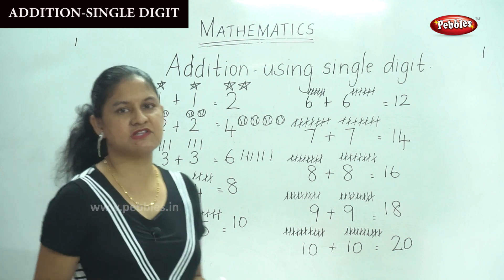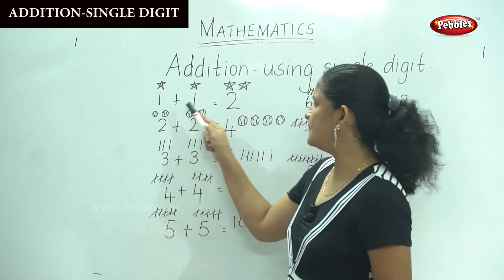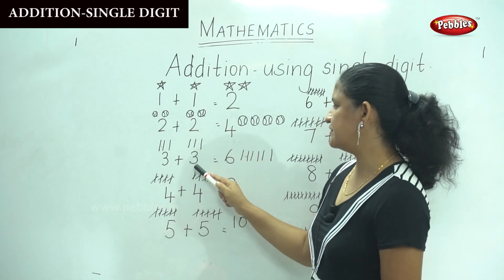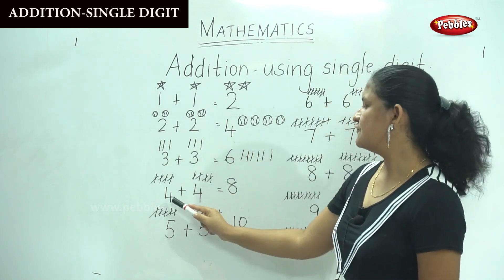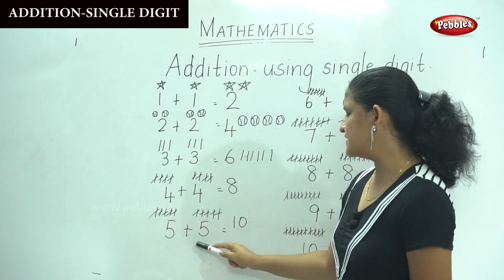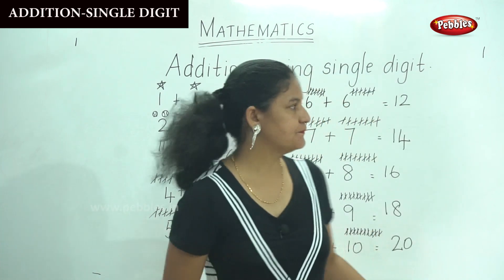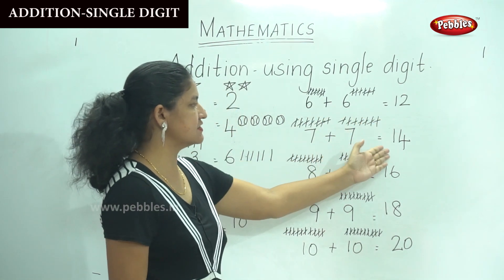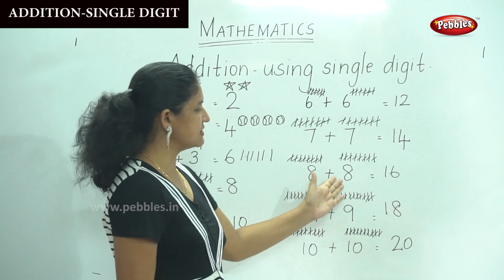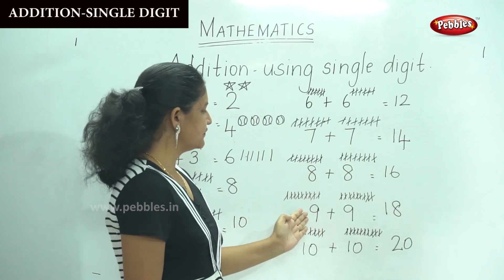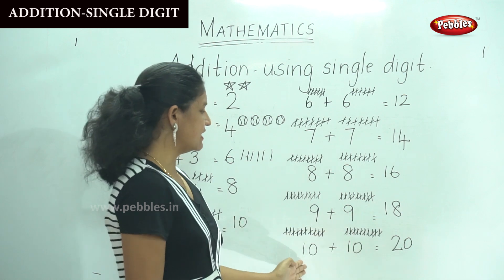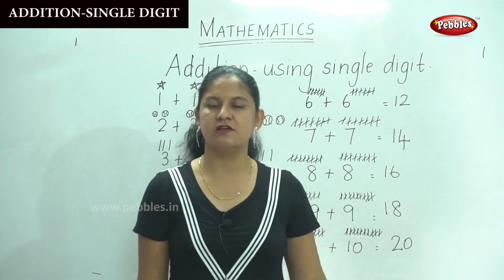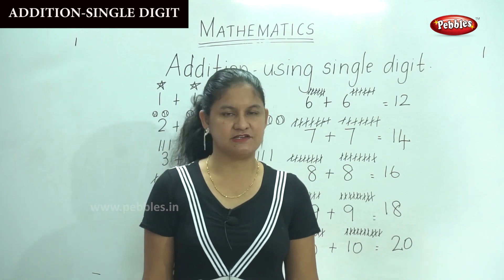Shall we see it once again? 1 plus 1 is 2. 2 plus 2 gives us 4. 3 plus 3 gives us 6. 4 plus 4 is 8. 5 plus 5 gives us 10. 6 plus 6 gives us 12. 7 plus 7 gives us 14. 8 plus 8 gives us 16. 9 plus 9 gives us 18. And 10 plus 10 gives us number 20. This is your addition using single digits.